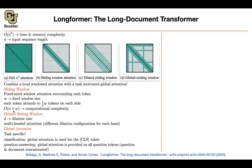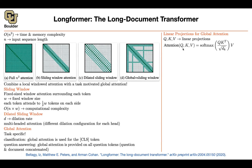So you need a combination of global and sliding window attention depending on the downstream task. Mathematically, the changes are minimal. You still have your query, key, value — query getting multiplied by the key, followed by softmax. But now some queries use sliding window attention, and some queries are global. For instance, if you pick a sliding window query, its keys and values come from a small neighborhood of tokens to the left and to the right, so K has a smaller size.